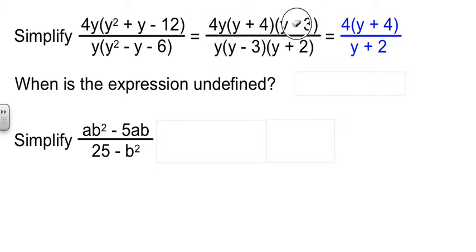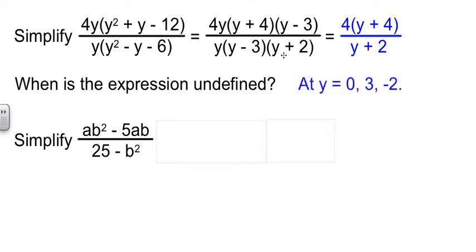Now let's answer when the expression is undefined. We need to know when the denominator equals zero. It equals zero if y is 0 for the first factor, or if y is 3 for the second factor, or if y is negative 2 for the last factor.